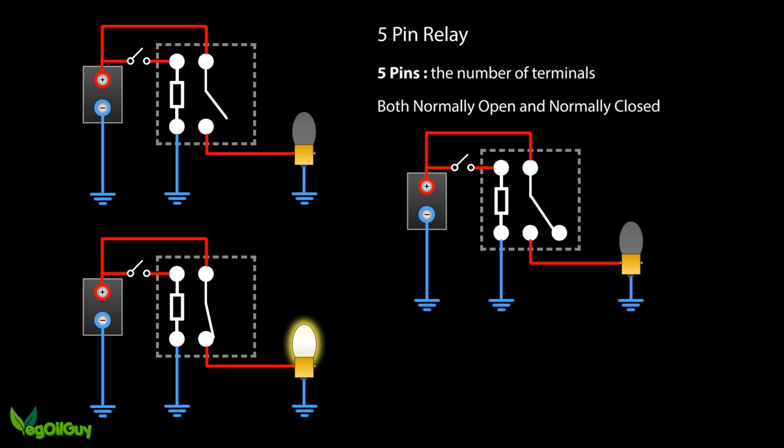However, the clever bit with a 5 pin relay is that it can control two circuits. Let's put in another bulb and put it across our 5th pin. Now see what happens. With the master switch closed, one bulb is lit. But the other bulb isn't. With the master switch open, the reverse is true. And that's because there's a normally open and a normally closed element at play here.